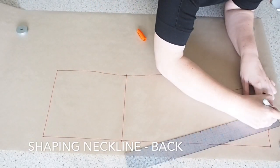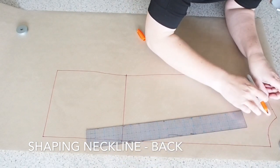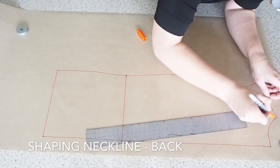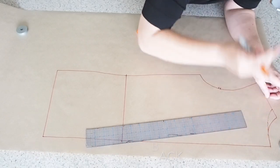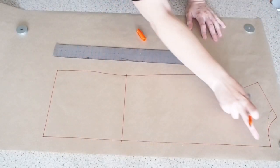And now I want to make the neckline on this pattern a little bit bigger. So I've just measured in one inch from the neck point along the shoulder seam. And now I'm just redrawing in that nice curved neck.